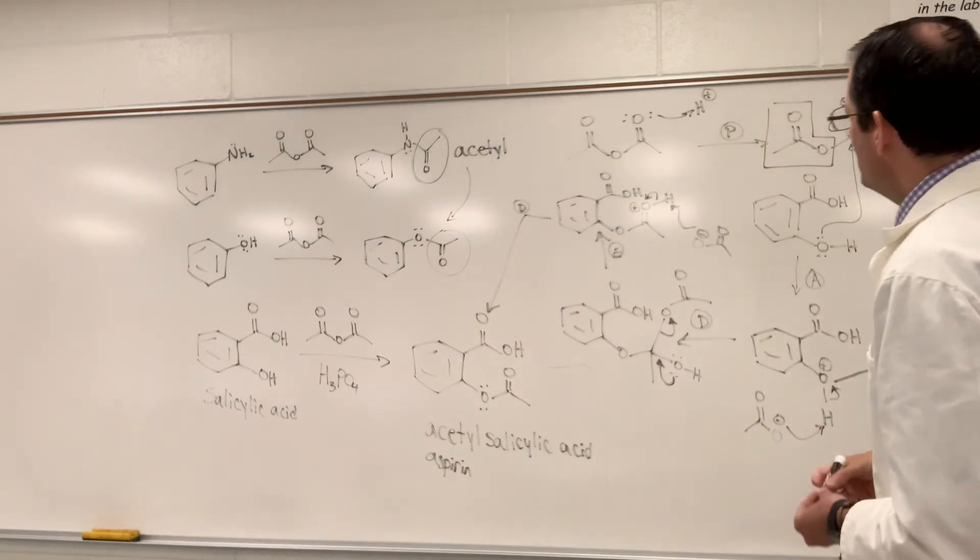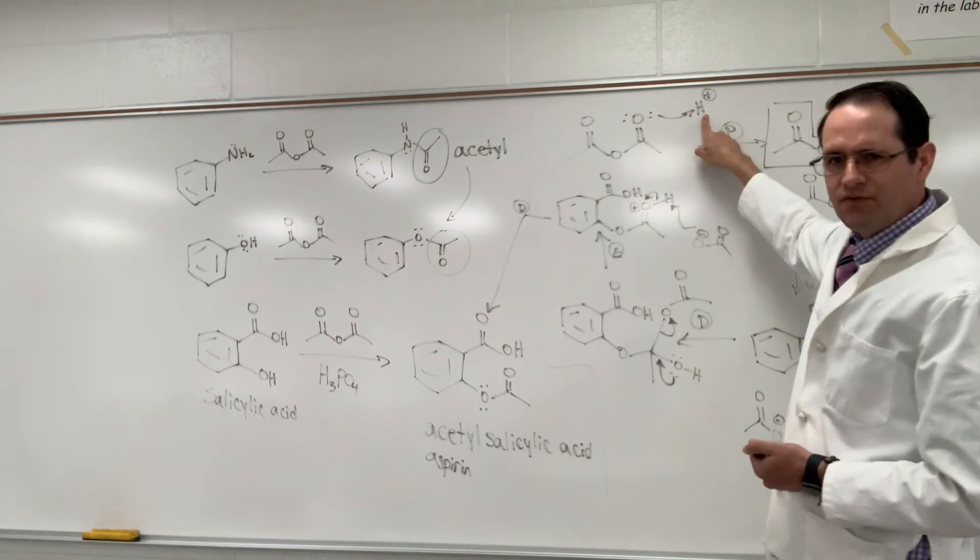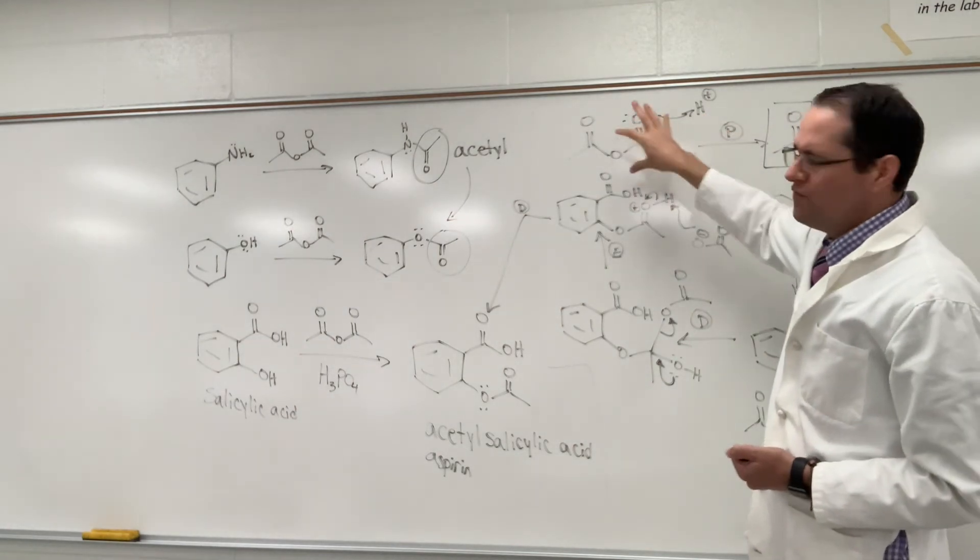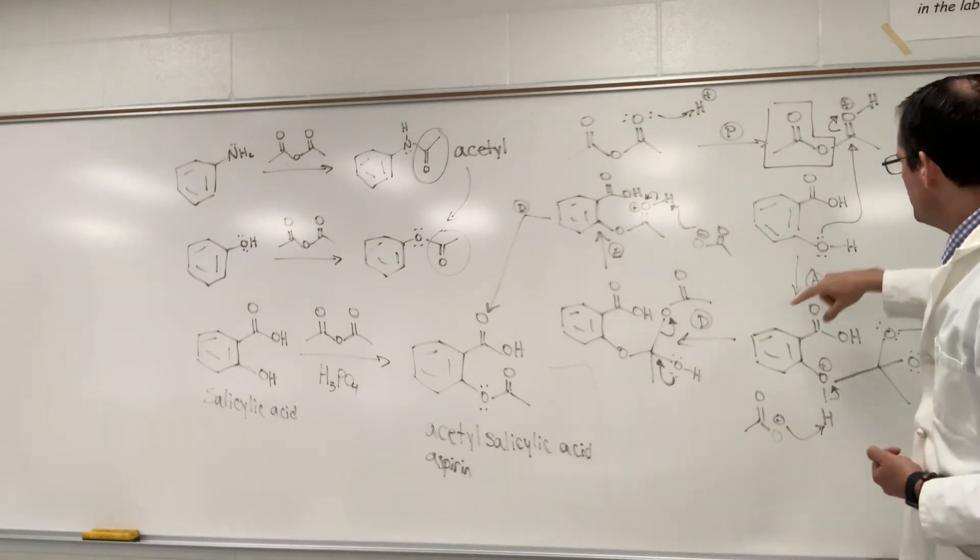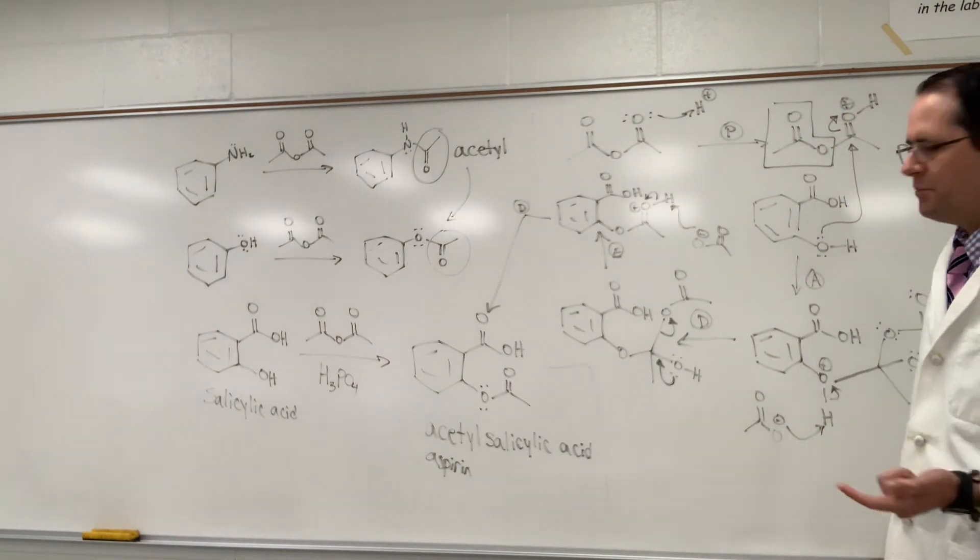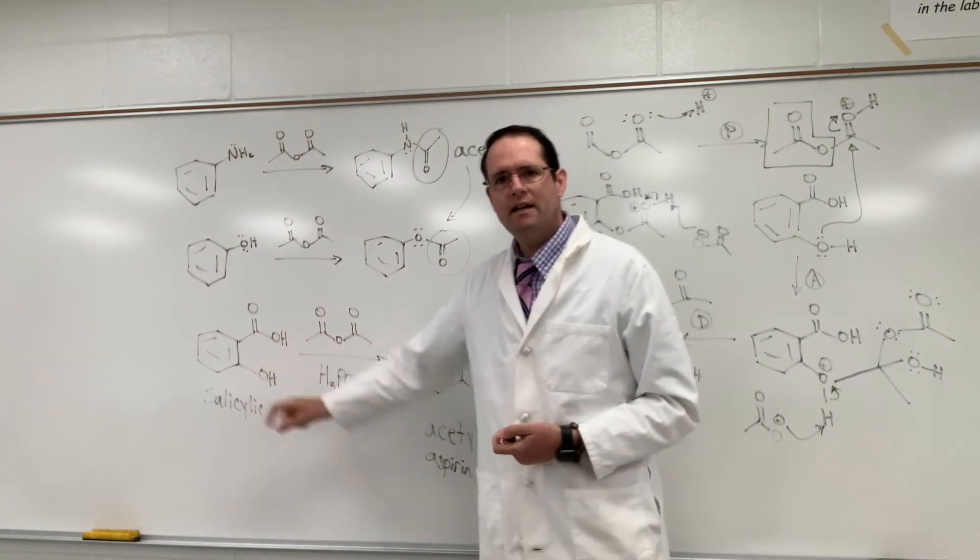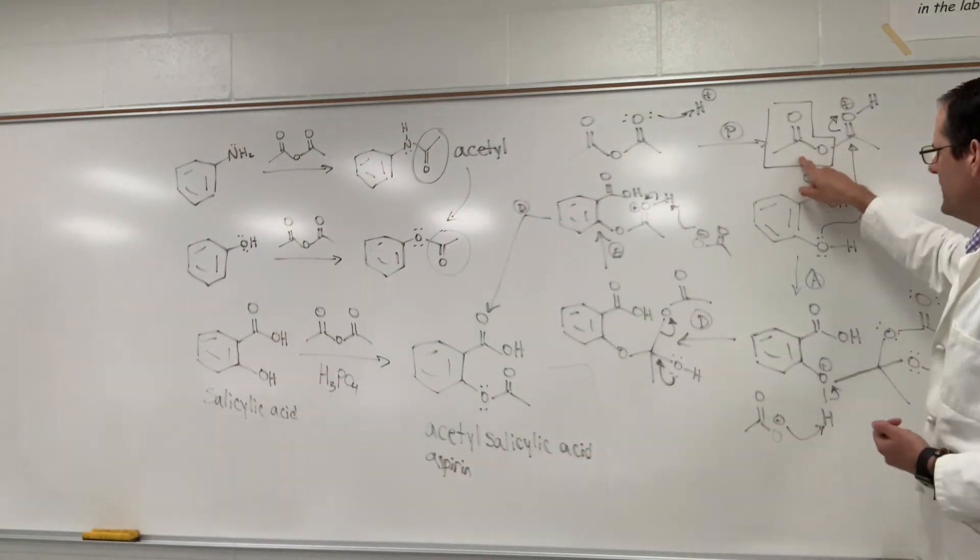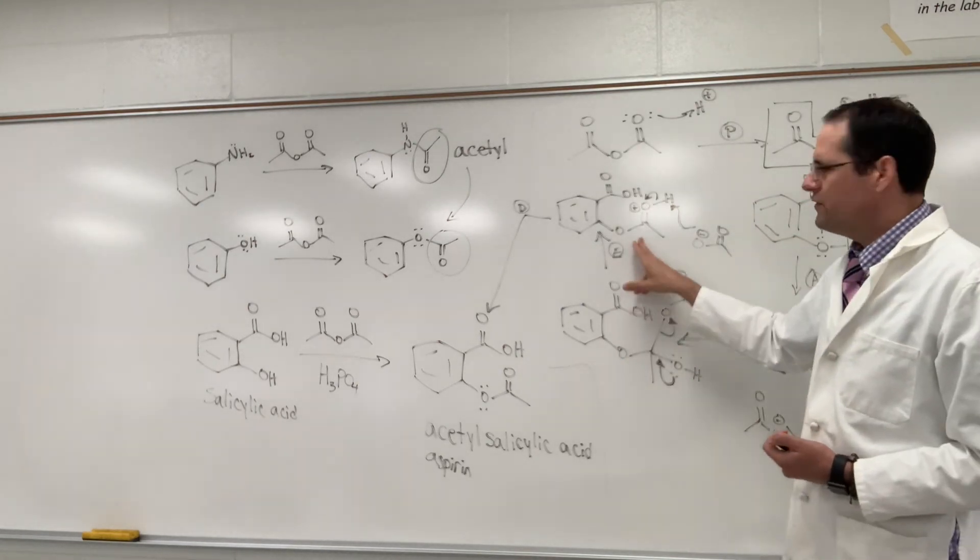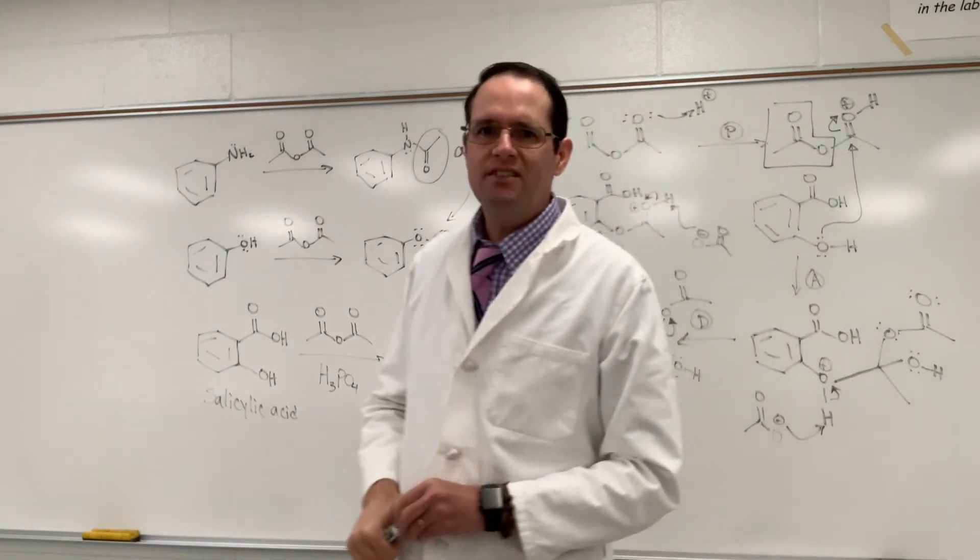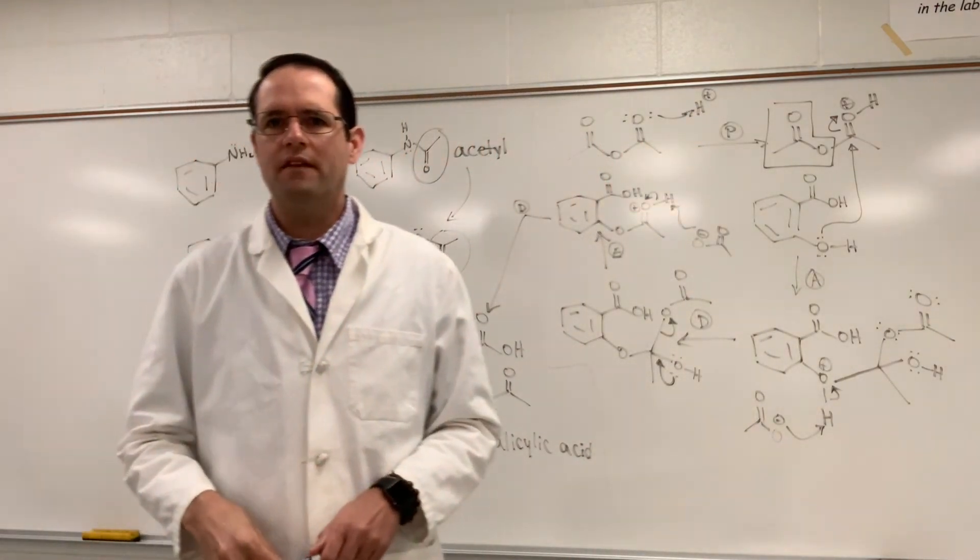If we could just review really quick here, we can see that the proton is involved. The phosphoric acid is a catalyst. It's involved in protonating the acetic anhydride and making it even more reactive towards nucleophilic acyl substitution. It's the phenol group of salicylic acid that's going to attack the carbonyl and eventually kick off acetate to give you acetyl salicylic acid or aspirin. Let's go get started on the lab now.